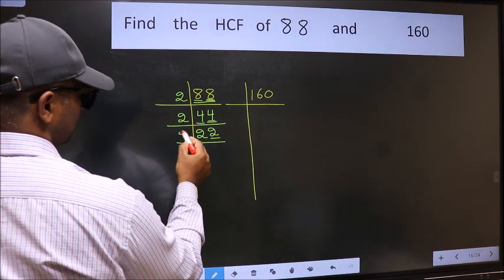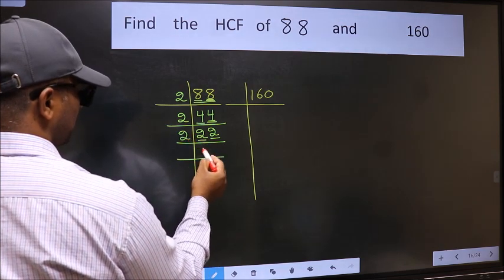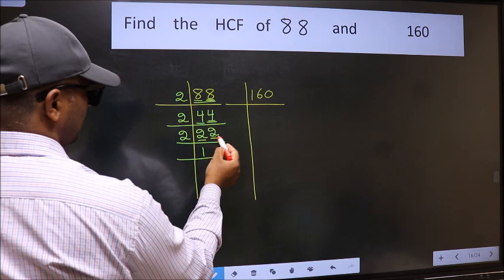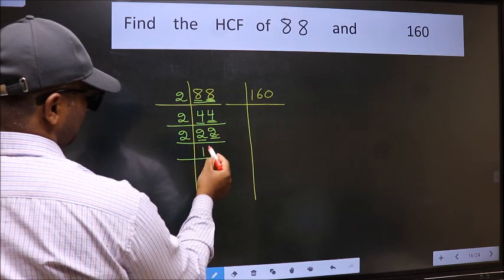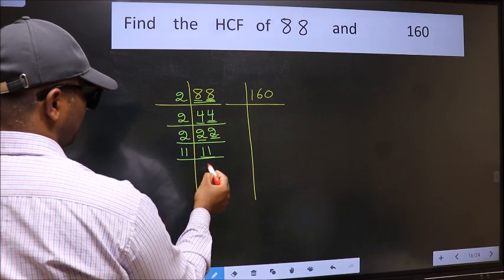Now last digit 2 is even, so take 2. First number 2, when do we get 2 in 2 table, 2 once 2. The other number 2, when do we get 2 in 2 table, 2 once 2. Now 11 is a prime number, so 11 once 11.